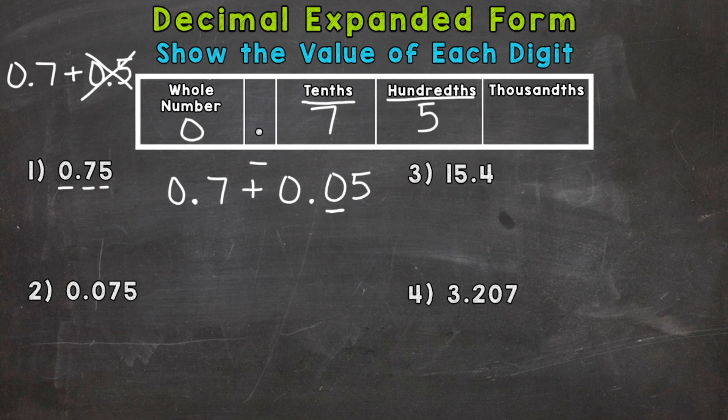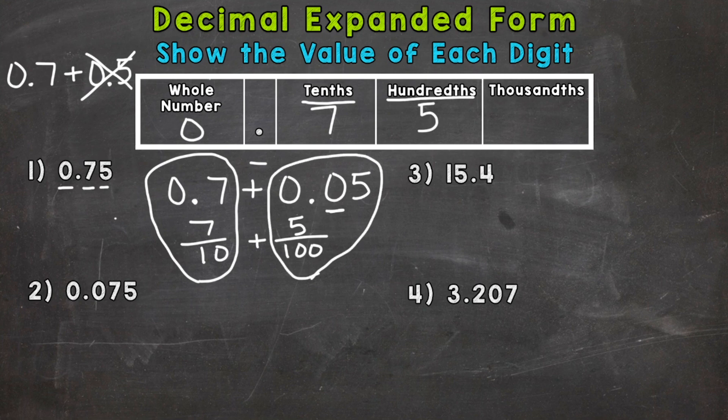Now, as far as fractions go, we would write seven tenths plus five hundredths. These are equivalent right here. One's in decimal form, one's in fractional form, and these are equivalent. So these are the exact same thing. One is obviously in decimal form and one is in fractional form.